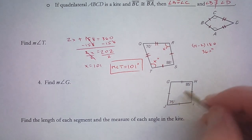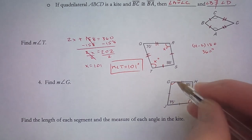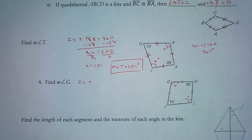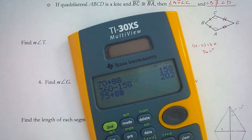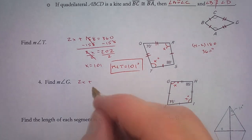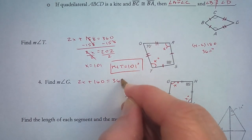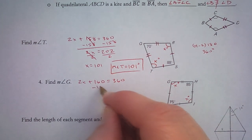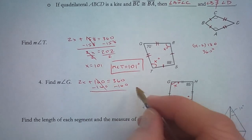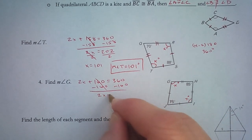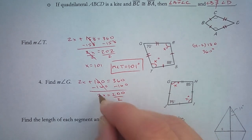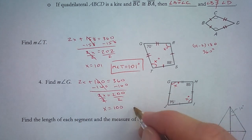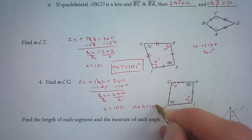Now find the measure of angle G. These two angles are not congruent, which means these two are, so I will call them both x degrees. So 2x plus 75 plus 85 — which is 160 — equals 360, because a quadrilateral always has a total of 360 degrees. Subtracting 160: 360 minus 160 is 200, so 2x equals 200. 200 divided by 2 is 100. So the measure of angle G is 100 degrees.